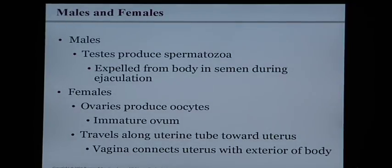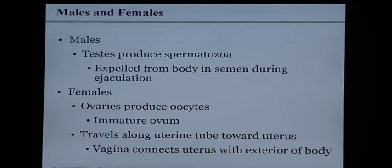In males, the testes produce spermatozoa — a mature sperm cell — and men make about half a billion every single day of their lives on average. They're expelled from the body in semen during ejaculation. The sperm cells are the actual cells in the semen, which is the fluid that surrounds and nourishes those cells. When we say semen it only refers to just the fluid part of ejaculate.